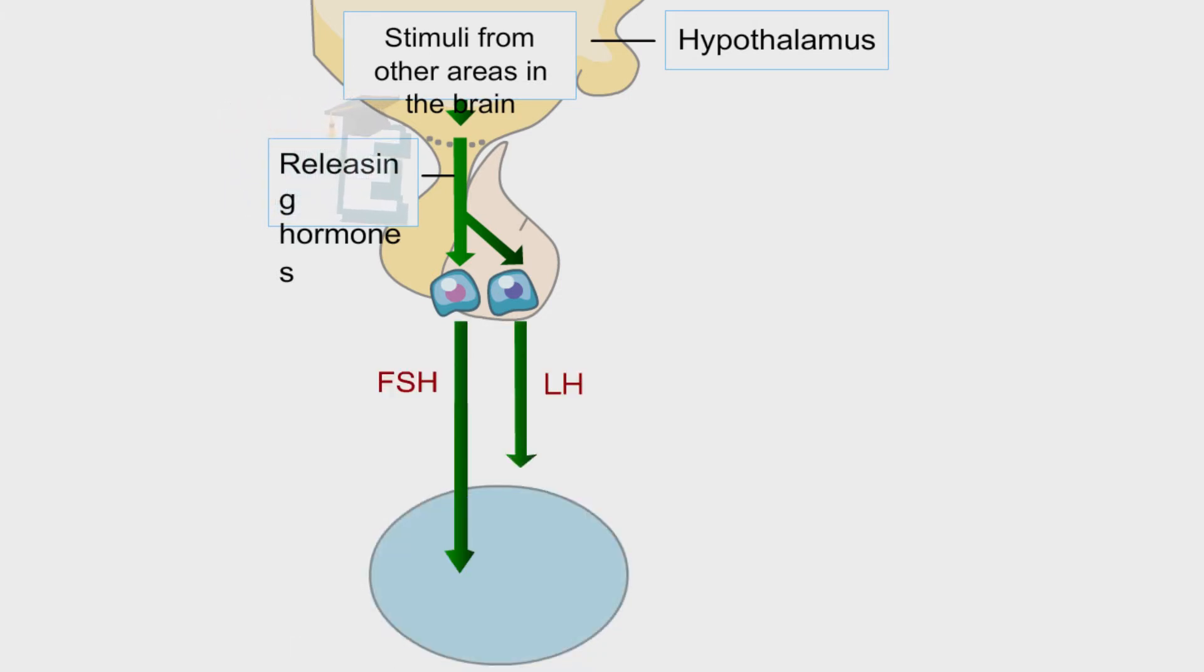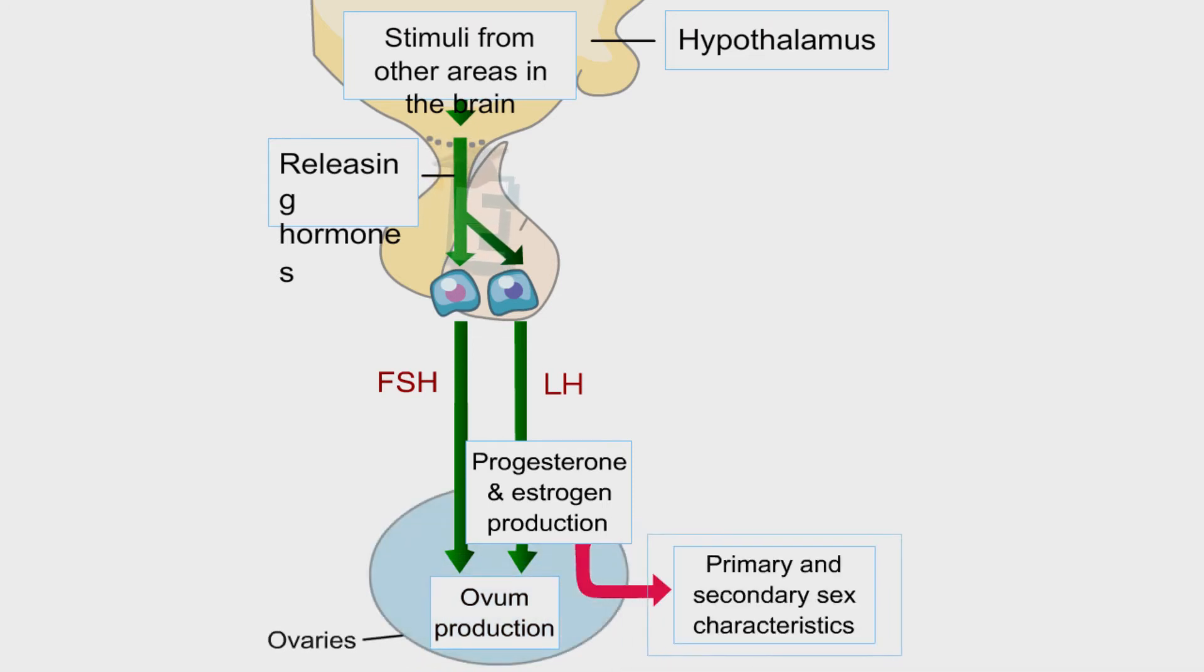FSH and LH hormones produce progesterone and estrogen. These hormones produce ovum in ovaries and give primary and secondary sex characteristics in females.